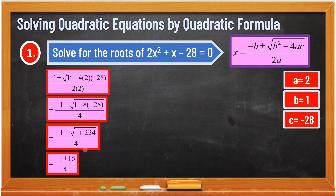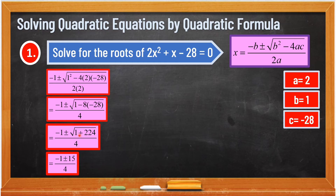Now we add what's inside the radical sign. 1 plus 224 is 225. What is the square root of 225? The square root is positive and negative 15 — there are two values: positive 15 and negative 15. Because 15 times 15 is 225. So we have negative 1 plus or minus 15 over 4.